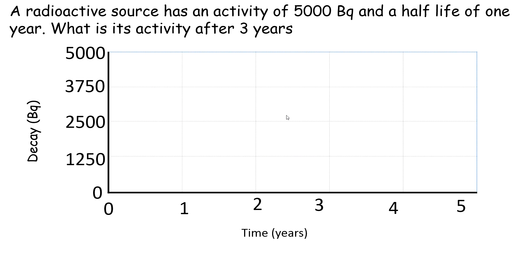Okay, a worked example here. A radioactive source has an activity of 5,000 becquerels and a half-life of one year. What's its activity after three years? So at the start you've got 5,000 becquerels, so you plot that on the graph. After one year it halves to 2,500. After two years it halves again to 1,250, and after three years it would be half again, which would be 625 becquerels.